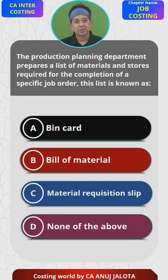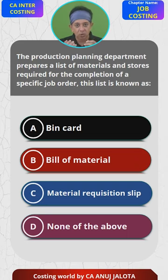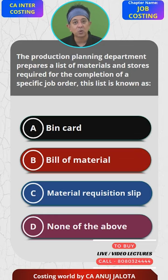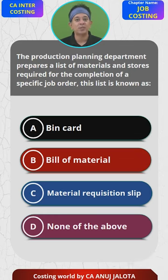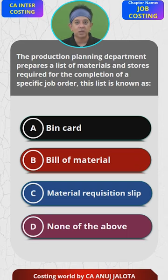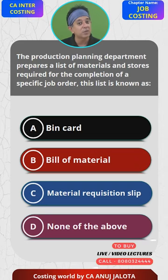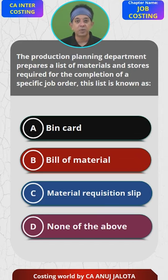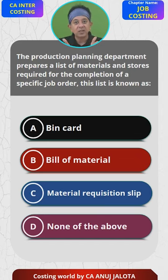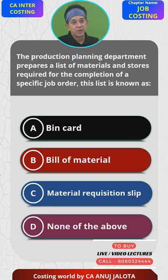Option B is bill of material. Whenever you get an order, you should always prepare a list of what material you require to complete that order — that list is called a bill of material. For example, if you are a fashion designer and got an order to make a dress, the bill of material would include: how much cloth is required, how much thread, how many buttons, and all such items.